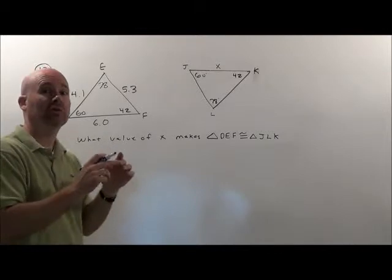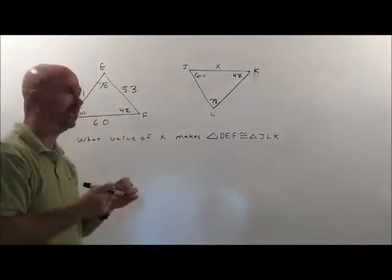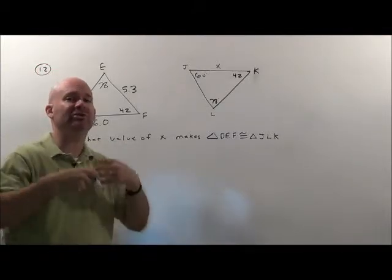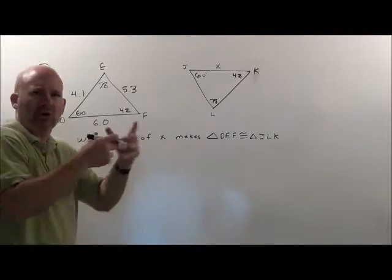So to make them congruent, meaning they're the exact same triangle, they've just been tilted or moved or flipped or something of that nature, means all the angles are the same and all side lengths are going to be the same. It's the exact same triangle, just been turned around a little bit.